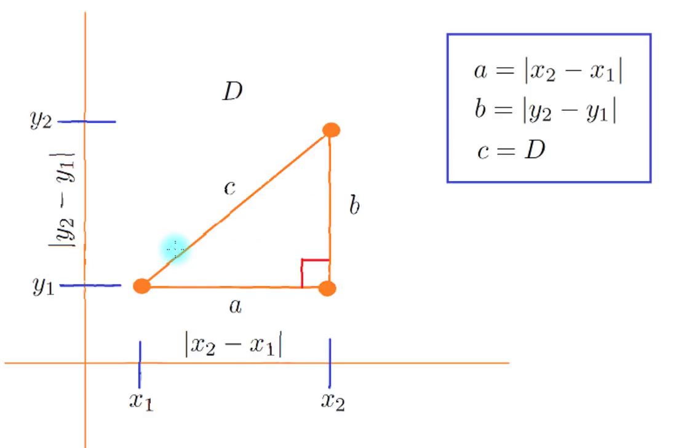Let a equal the distance of a, which is going to be the distance from x₁ to x₂, which is the absolute value of x₂ - x₁. Let b be the distance from y₂ to y₁, which is the absolute value of y₂ - y₁.